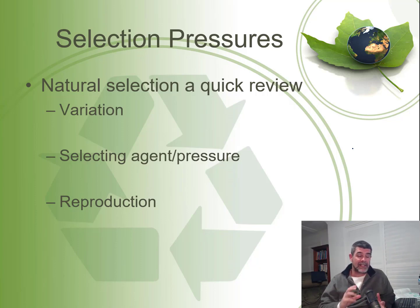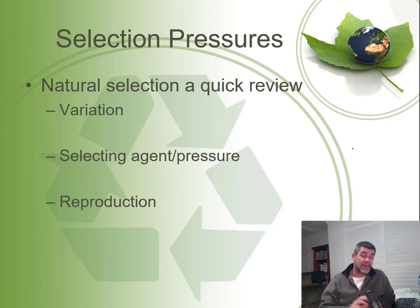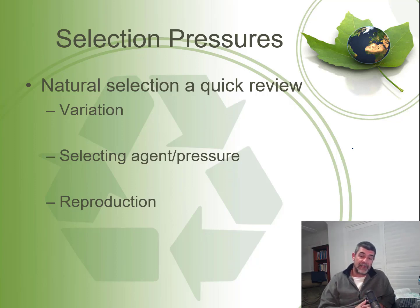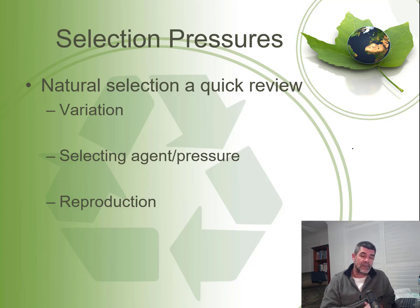The key thing about theories is that theories are explanatory — they should explain observations. If they can't explain the observations, then they either need to be modified or discarded. Darwin's theory of natural selection explains a lot of what we see in ecosystems, so let's just revisit it quickly.